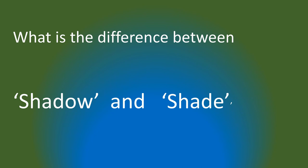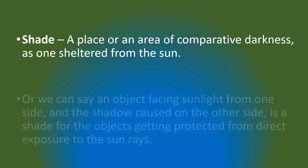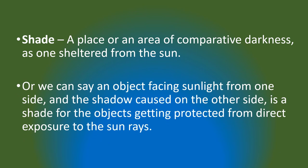At the beginning of the video I asked: what is the difference between shadow and shade? Shade is a place or area of comparative darkness, sheltered from the sun — jahan pe dhoop ko rukawat hoti hai. Or an object facing sunlight from one side — the area on the other side which is sheltered from direct sun rays is called shade for those protected from direct exposure.